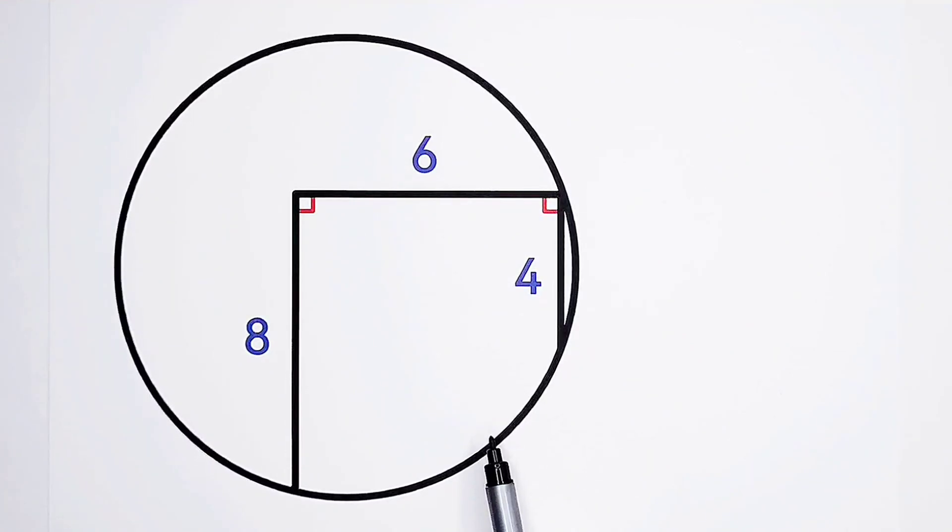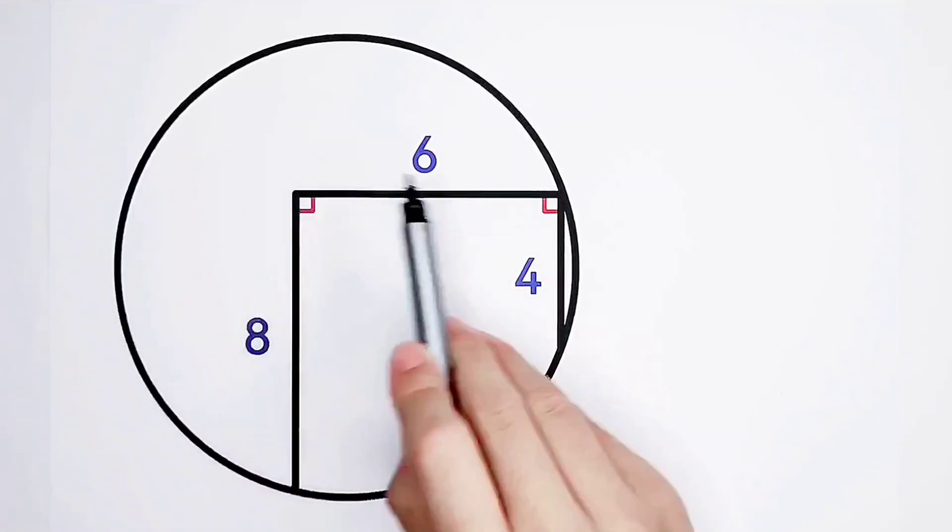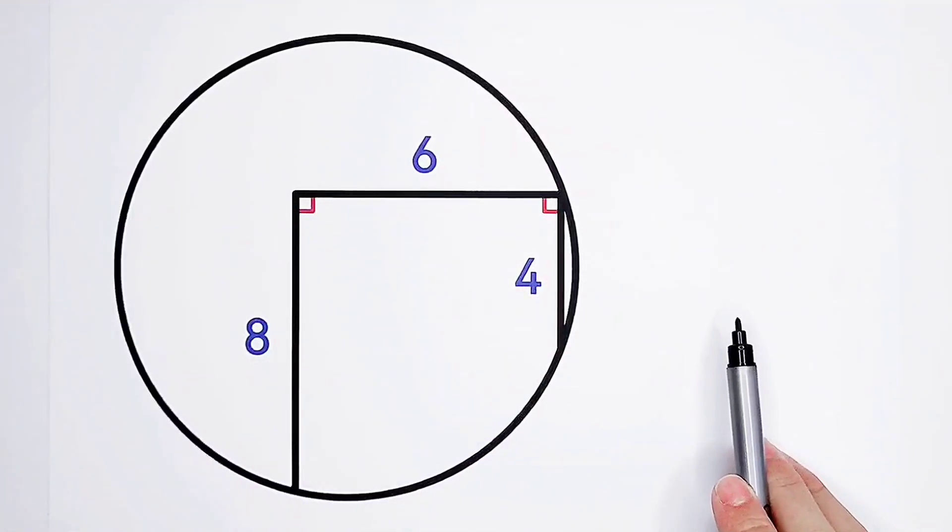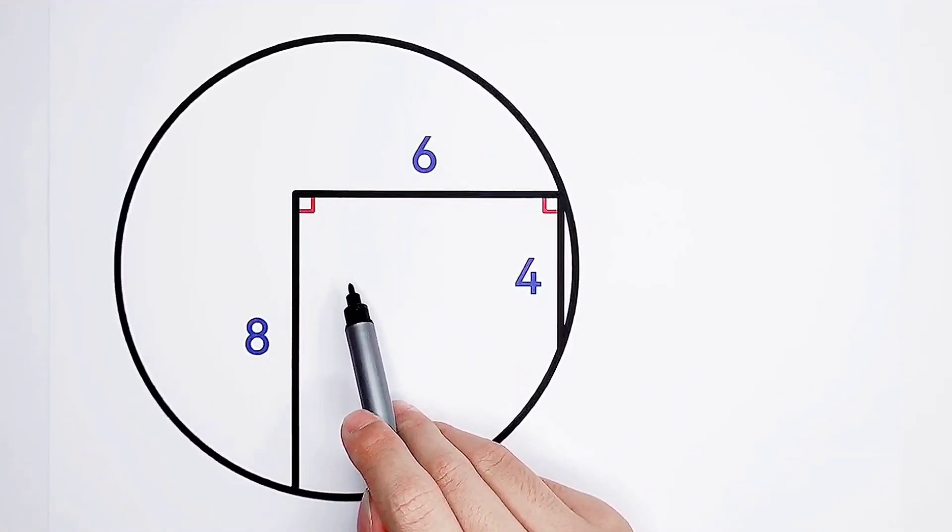For solving the area, we should first solve for the radius. For solving the radius, we should first find a radius. For finding a radius, we should first find the midpoint. Where is the midpoint? Here, here, here, here, here, or here? Oh, just kidding. The midpoint is in the middle, here.